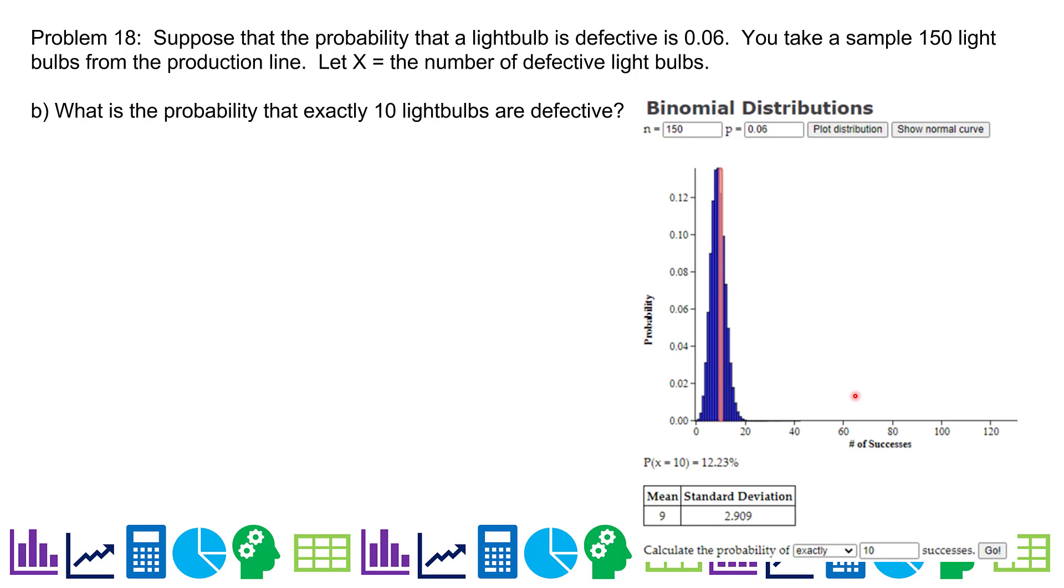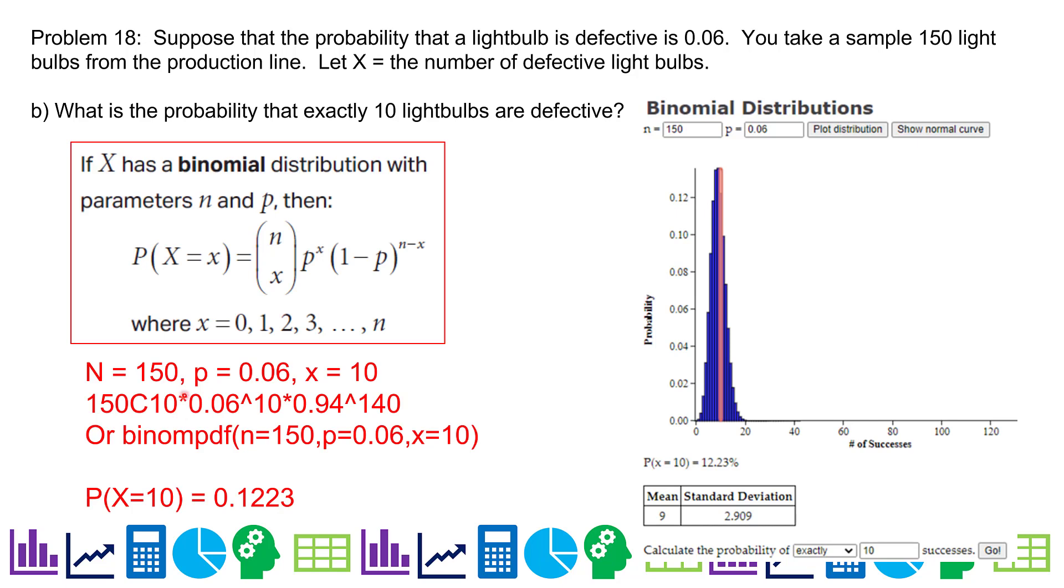What is the probability that exactly 10 light bulbs are defective? On Staplet, I would put in 150. Make sure you know your N and your P. That's important. And then X in this case is going to be 10. N and P should stay pretty much the same for your whole scenario. Unless they switch to the complement, so be careful there. But X will change from problem to problem. So here's my equation. It's 150 choose 10 times 0.06 to the 10th times 0.94 to the 140th, which is horrible. Or you could just say binomial PDF. And it's 150, P is 0.06, X is 10. And it will give you 0.1223. And also you can see here, when I did it on the Staplet, exactly 10 successes, I got 12.23%.